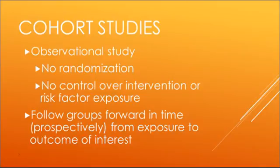Cohort studies are observational studies — in other words, there isn't any randomization, and we don't control any intervention or risk factor exposure. With a cohort study, what we're doing is we're taking a group of people, called a cohort, and we're following them forward in time, looking at whether or not they're exposed to some type of potential exposure status, and then we follow them forward in time to see if they end up with some sort of outcome of interest.